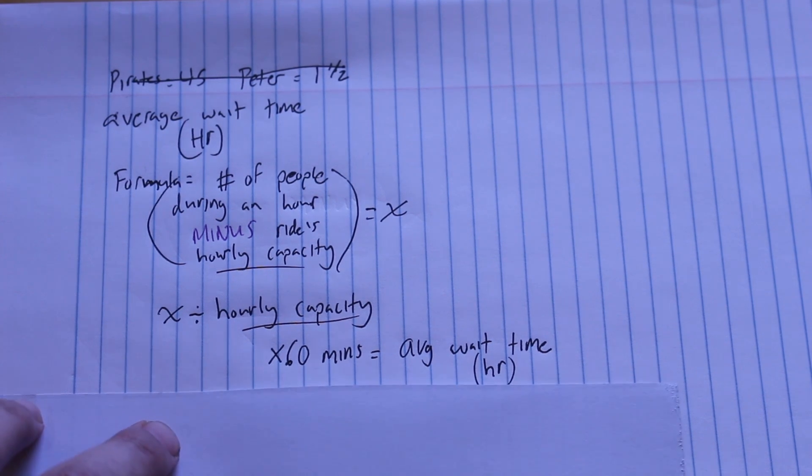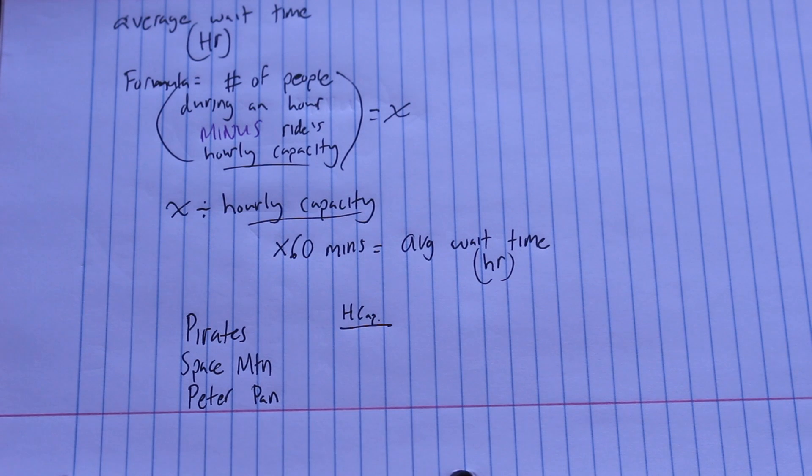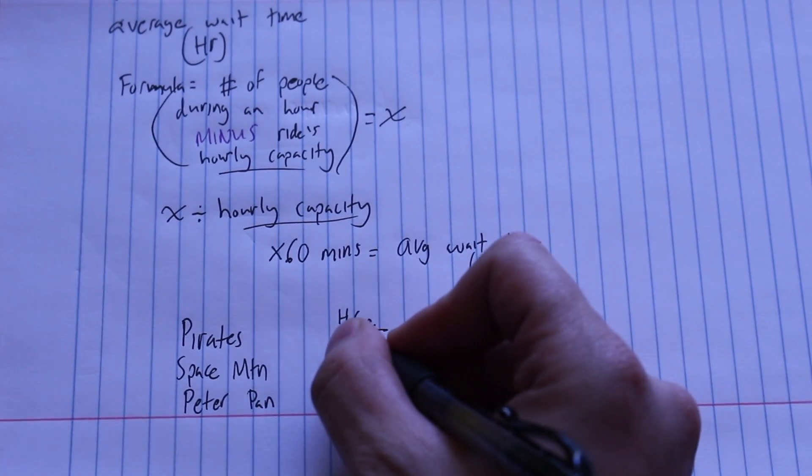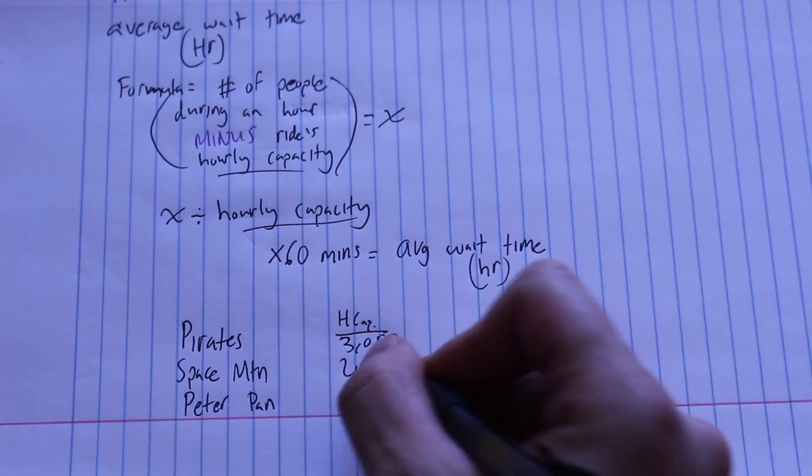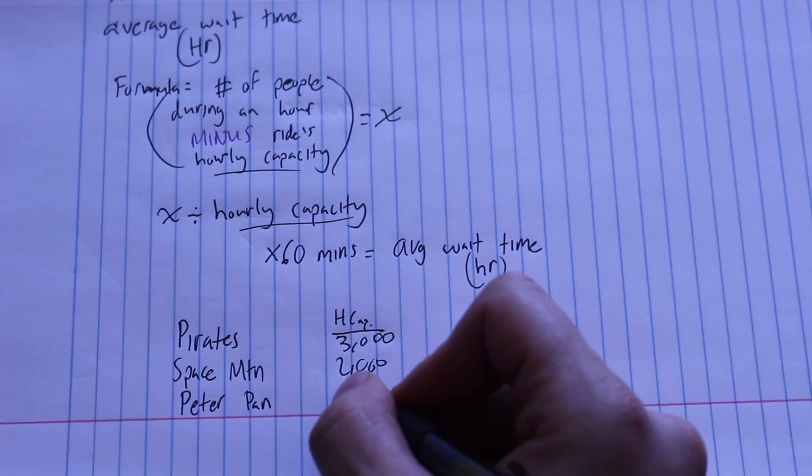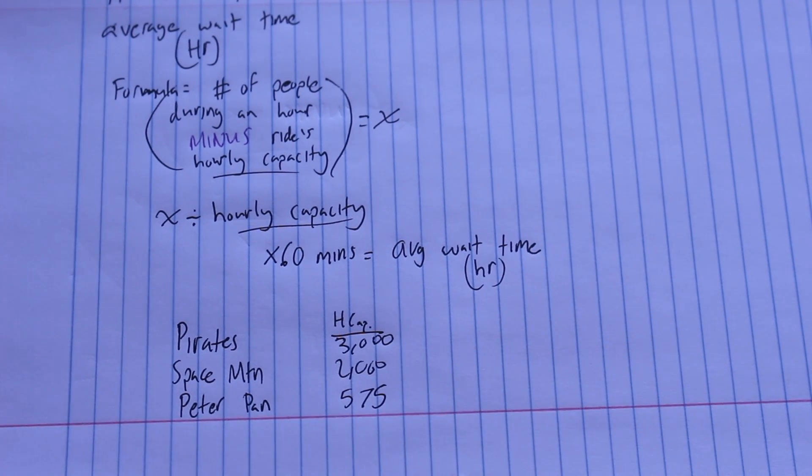Now I've taken three different rides and broken down their hourly capacity. I've got Pirates, Space Mountain, and Peter Pan. Pirates has an hourly capacity of about 3,000. Space Mountain has an hourly capacity of about 2,000. And Peter Pan has an hourly capacity of about 575 people.